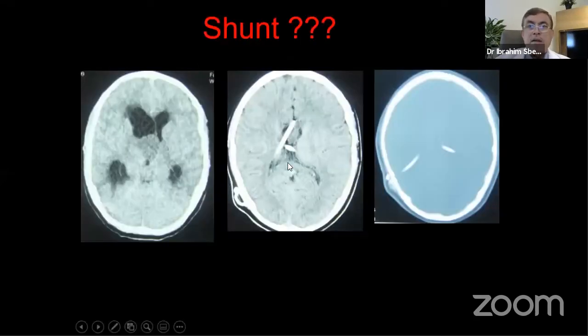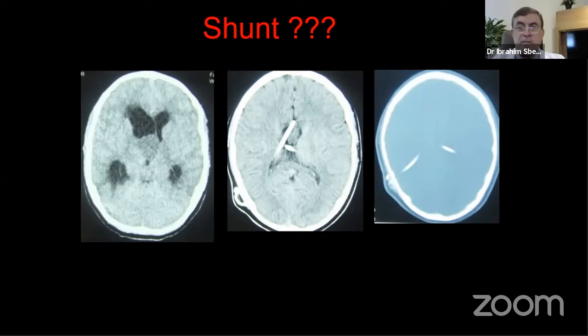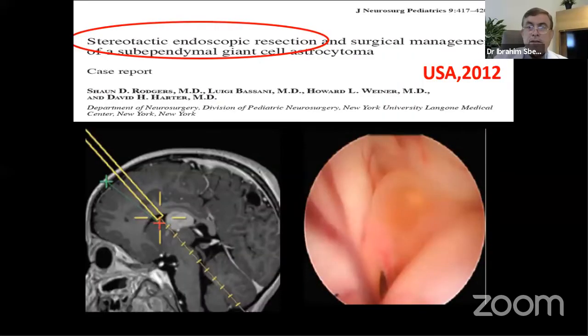Bilateral shunts are the worst scenario and represent a crime against patients. Endoscopy holds the future of neurosurgery for intraventricular lesions, though its limitation for SEGA is that these tumors are highly vascular and bleed heavily, making endoscopy a second-line choice. In experienced hands, it remains a valid option.